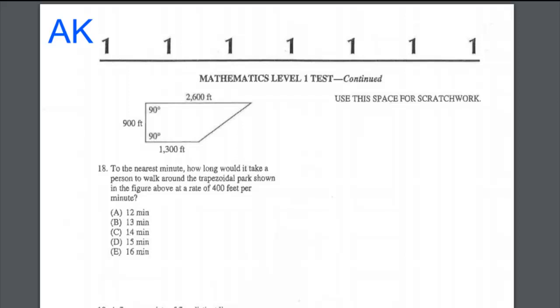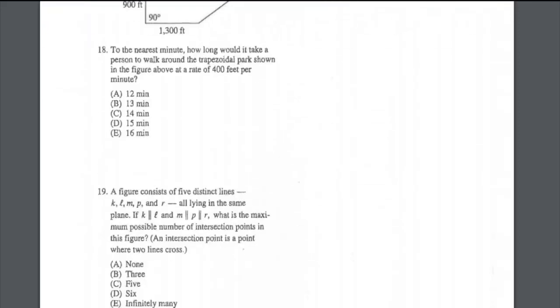We find the square root to get approximately the length of that side. Adding all sides together and then dividing by 400, it's approximately 15.9, which means 16 minutes. The suitable answer is number E.